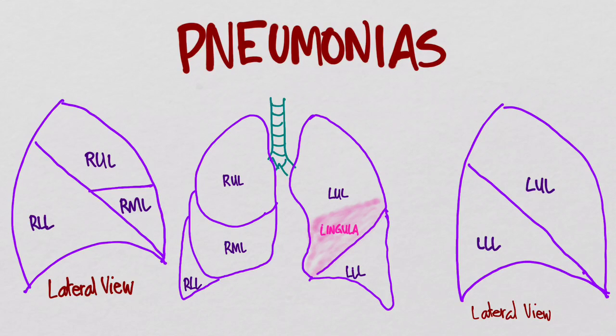On a lateral X-ray, you would see the oblique fissure going this way and the horizontal fissure going this way, and the oblique fissure on the left going this way.